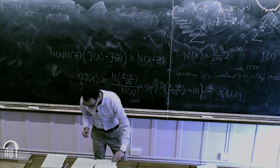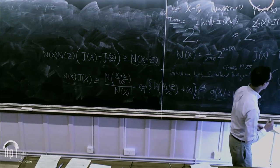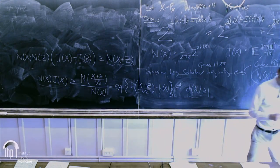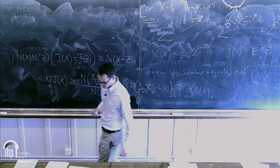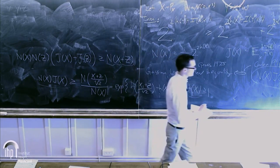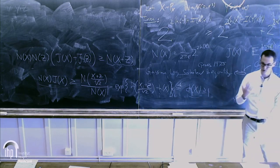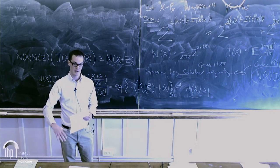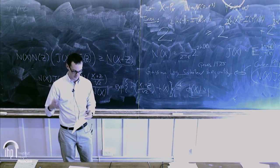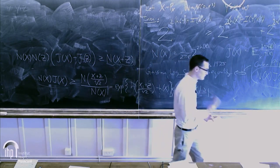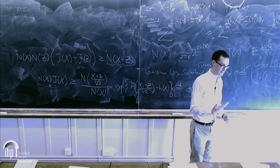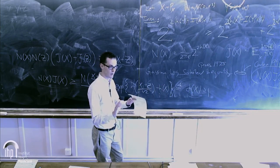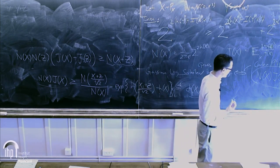I find this all beautiful: we start with an operational information theory problem, gain insight into how to improve the entropy power inequality, and pull back to find something very fundamental that improves on inequalities known elsewhere — in a natural way. The lower bound is expressed in terms of the distribution itself, measuring closeness to Gaussian.